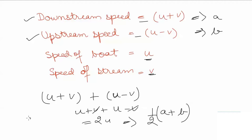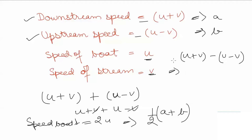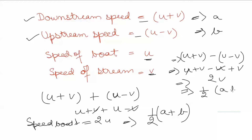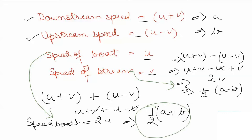That is the formula to calculate the speed of boat. In case you want to find the speed of stream, simply deduct the upstream speed from the downstream speed. So U plus V minus (U minus V) comes out to be 2V. Similarly, the speed of stream is one half of A minus B.